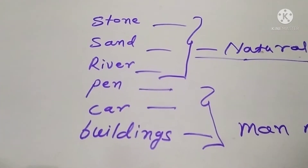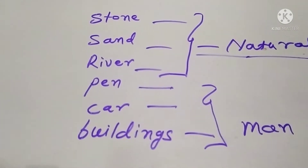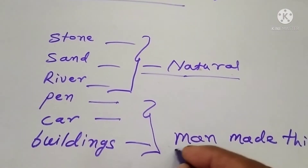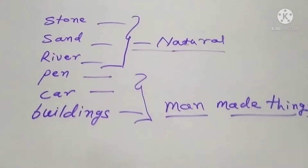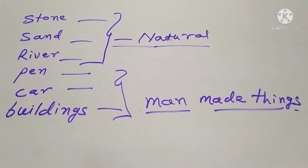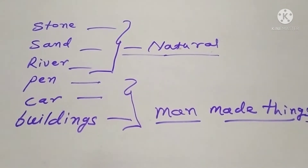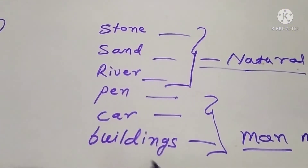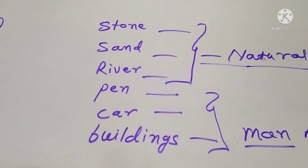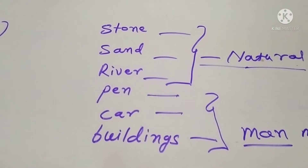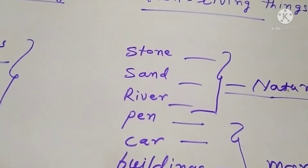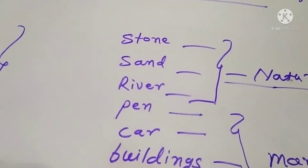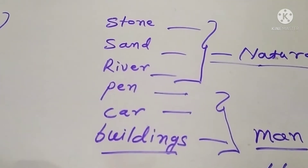Man-made things — pen, car, buildings — humans make them. So these are the man-made things, and these are also non-living things.